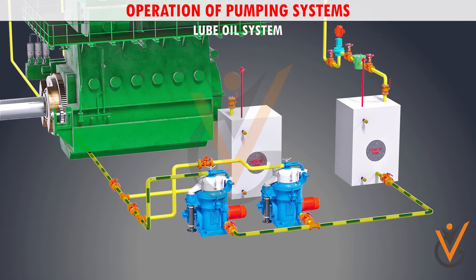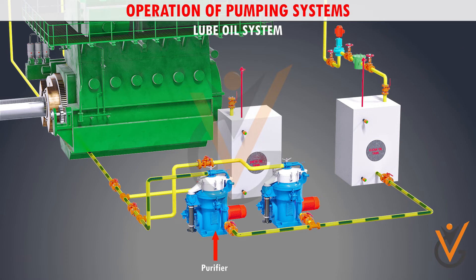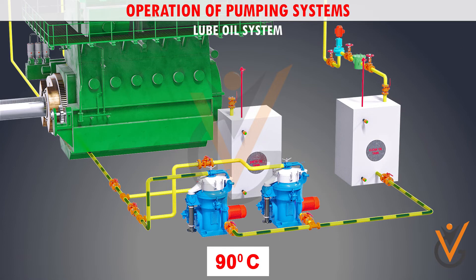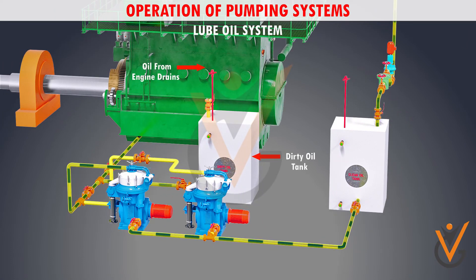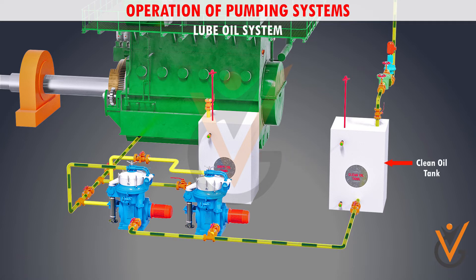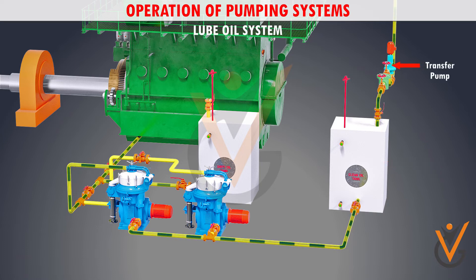The main engine lube oil purifier takes suction from the main engine lube oil sump and purifies the oil. Its temperature is maintained around 90 degrees Celsius to allow efficient separation. The engine drains are connected to the dirty oil tank, from which the lube oil purifiers also take suction, and the purified oil is transferred to the clean oil tank, from where it can be reused by transferring it back to the engine sump using a transfer pump.